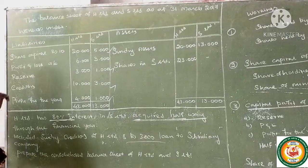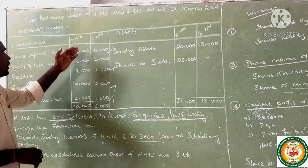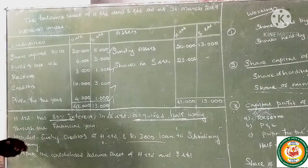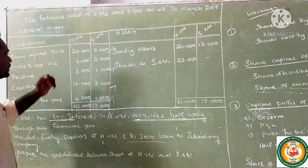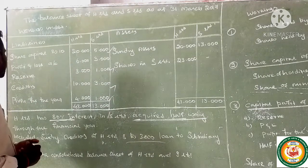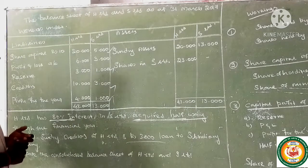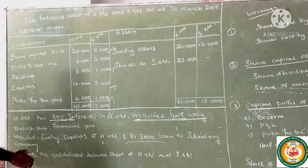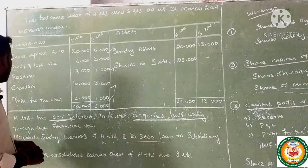On the liability side: share capital (Rs. 10 each) — HL: 20,000; S Limited: 5,000. Profit and loss account — HL: 6,000; S Limited: 3,000. Reserve — HL: 3,000; S Limited: 1,000. Creditors — HL: 10,000; S Limited: 3,000.